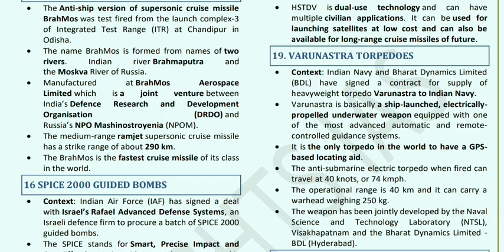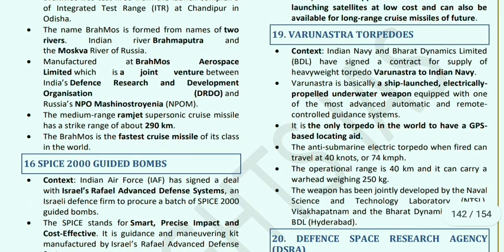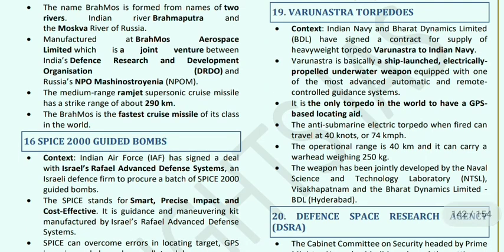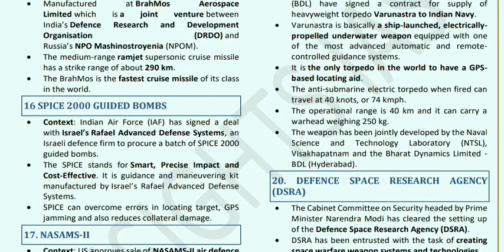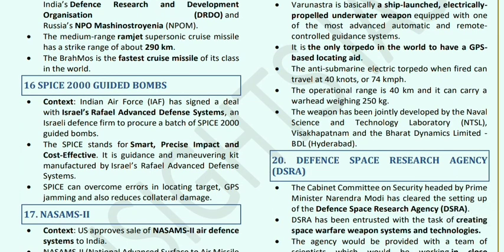Varunastra torpedoes: Indian Navy and Bharat Dynamics Limited signed a contract to supply Varunastra torpedoes to the Indian Navy. It is a ship-launched, electrically propelled underwater weapon equipped with the most advanced automatic and remote-controlled guidance system. It is the only torpedo in the world to have a GPS-based locating aid. It is an anti-submarine electric torpedo that can travel at 40 knots (74 km/h) with an operational range of 40 km and can carry a 250 kg warhead. It was developed by Naval Science and Technology Laboratory in Visakhapatnam and Bharat Dynamics Limited.